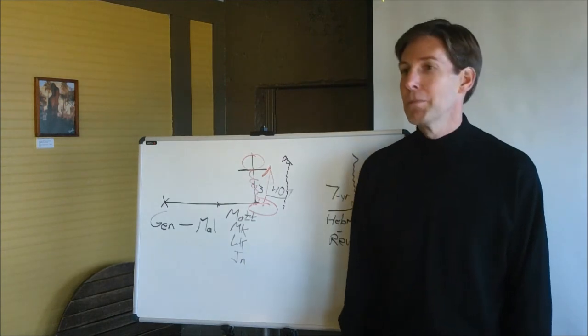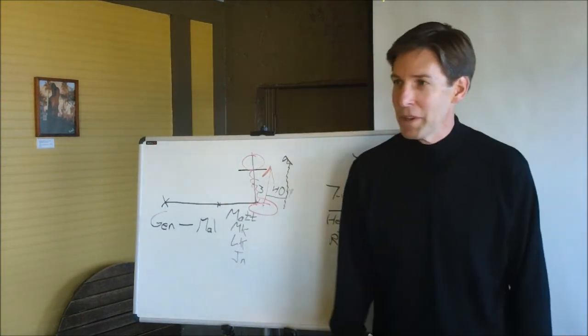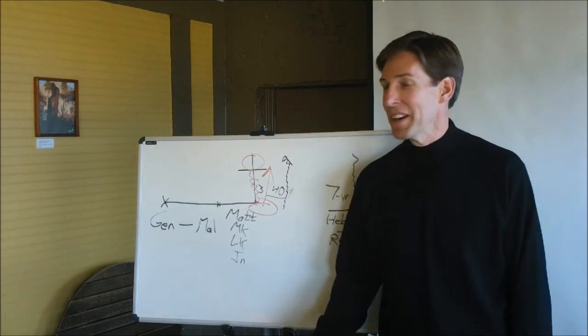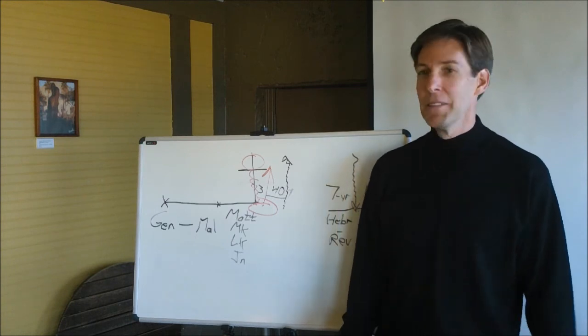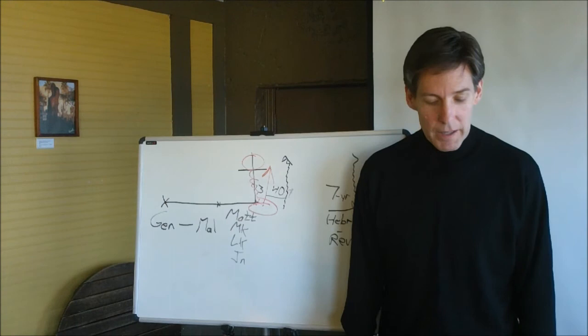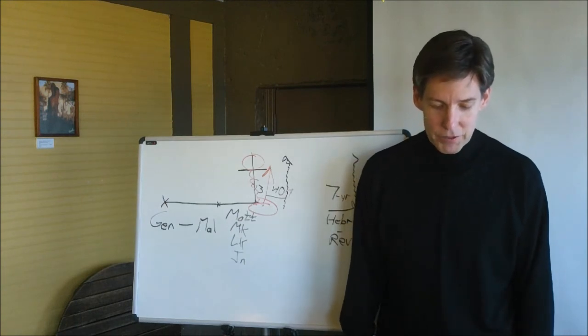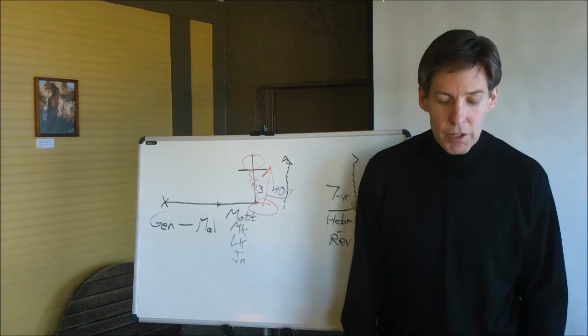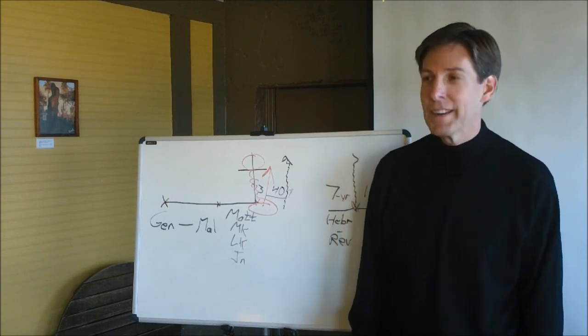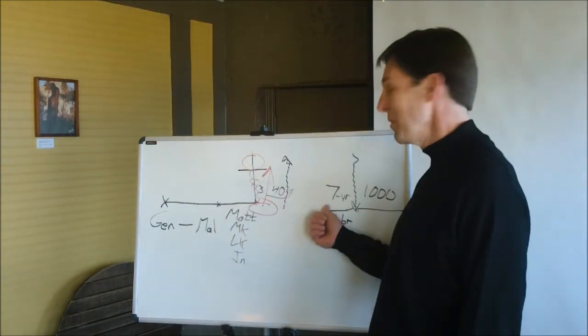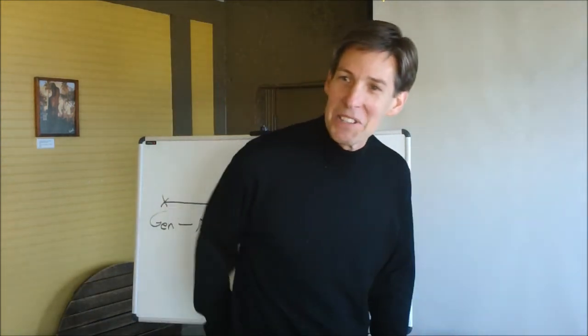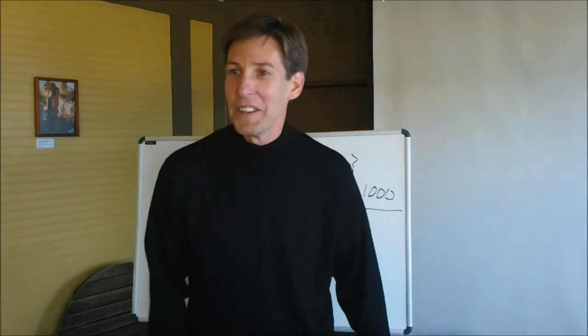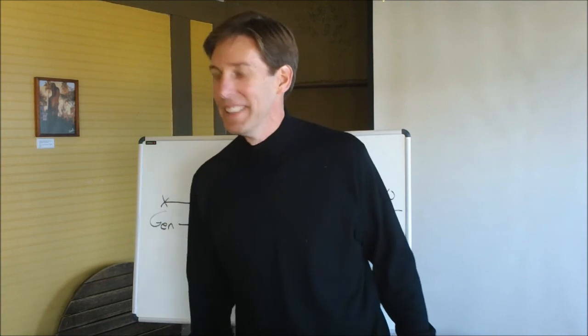Chapter 5, verse 1. But a certain man named Ananias, with Sapphira his wife, sold a possession. Why did it say but? They did just what they were supposed to do, didn't they? Verse 2. And kept back part of the price, his wife also being privy to it, and brought a certain part, and laid it at the apostles' feet. I see what's going on here. Just in case this Y2K doesn't hit, we'll sell our land like we're supposed to. We're going to keep back just a little bit, just in case, and we'll bring the rest and put it at the apostles' feet. They won't miss this little bit, will they?